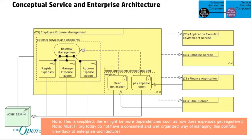I'll start with an example that I'll use throughout the next 40 minutes. The example is employee expense management. Most organizations have an employee expense management system delivered by IT in some form or shape — internally developed or as a service. We have a conceptual service called Employee Expense Management, or EEM, and it delivers three business functions: you can register expenses, manage expense reports, and approve expense reports.